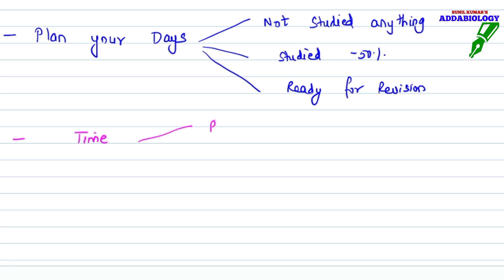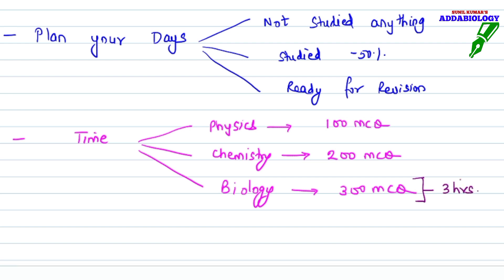Decide and then plan your days. The time which I want you to invest is in physics, chemistry and biology. This is must do every day - at least solve 100 MCQs of physics, 200 MCQs of chemistry and 300 MCQs of biology. For 300 MCQs, take 3 hours. 200 MCQs, I give you 2 hours for chemistry, and 2 hours for 100 MCQs of physics.